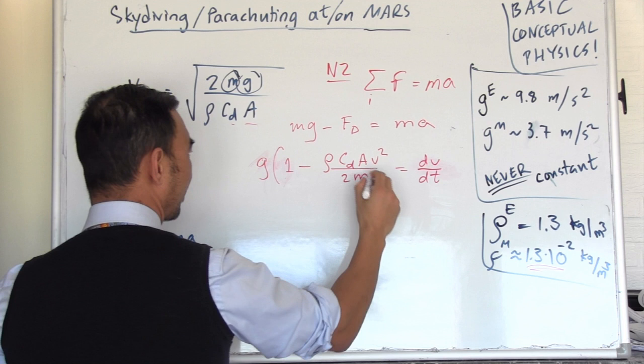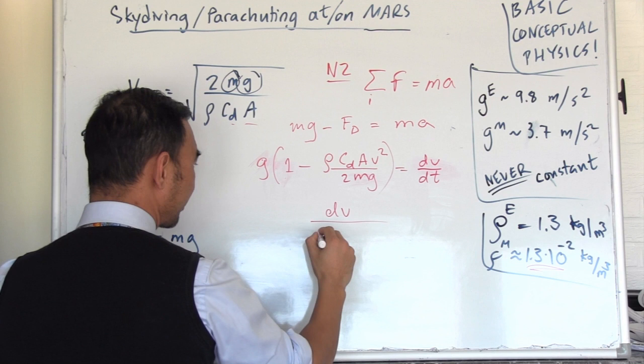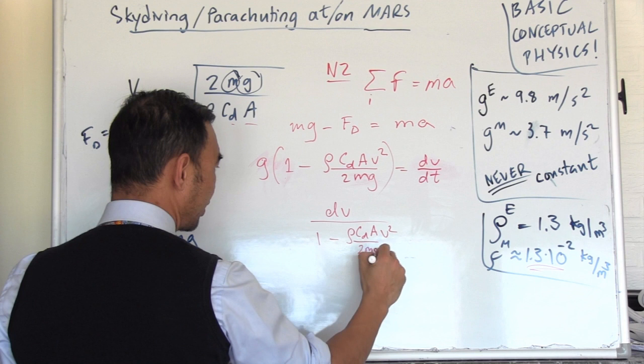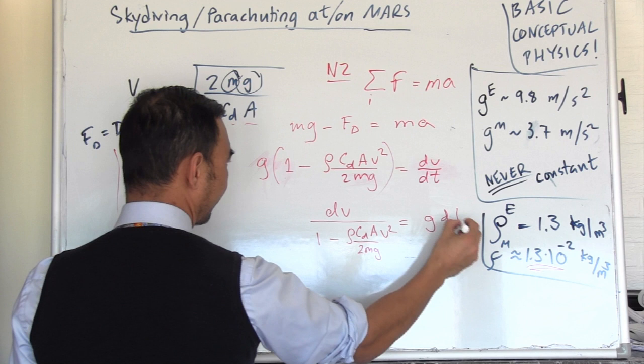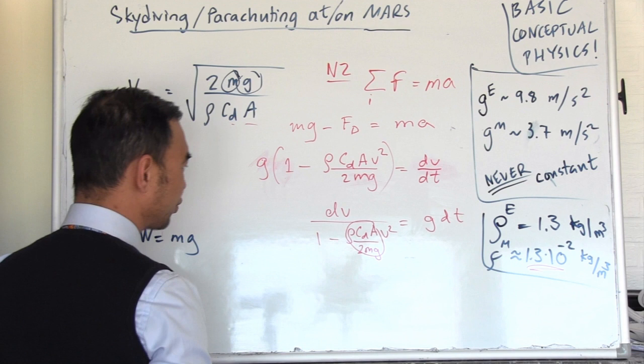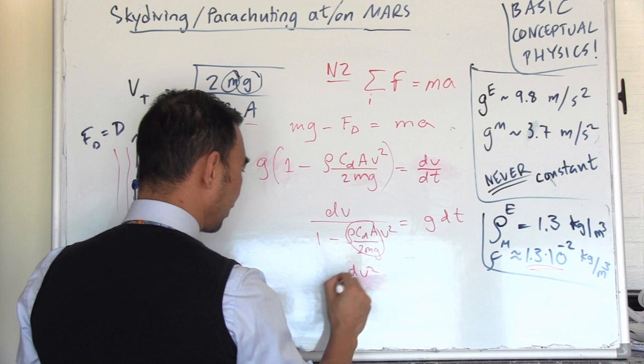Then rearrange everything a little bit because you want v and v to be in the same place. What I do now is I pull out, I factorize g. Then rearranging it would be dv divided by the parenthesis rho CD A v squared divided by 2mg equals g dt. This thing looks complicated, so we let it be alpha squared.